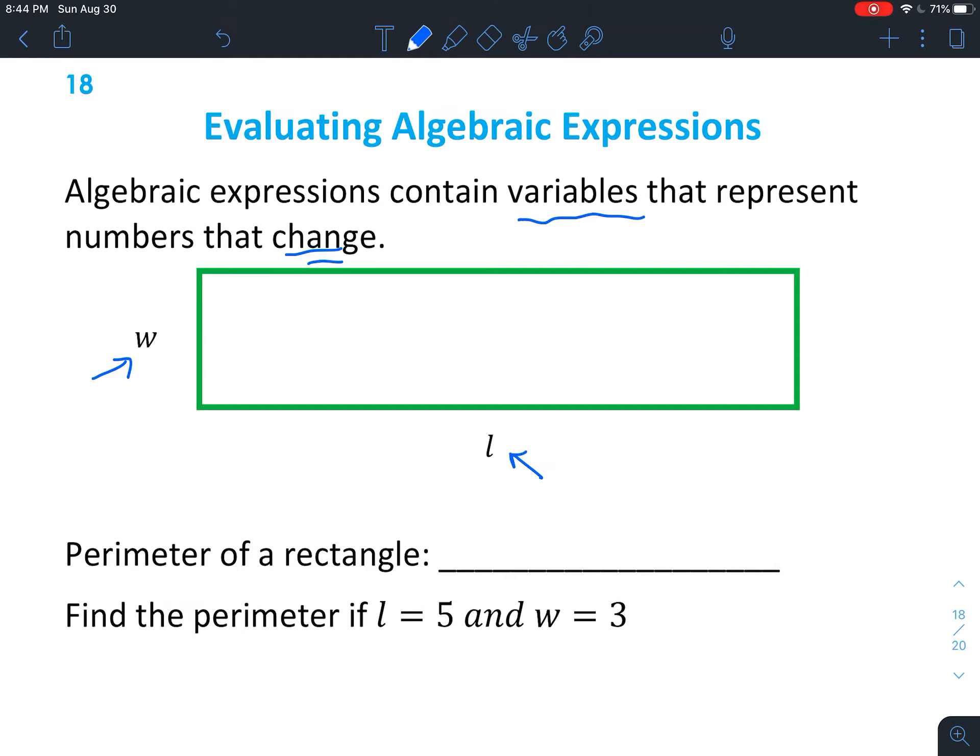Just keep in mind that this side is also W. When they're across from each other, they're the same length. And then up here is also an L. Usually you write it with a little loopy cursive L, so that way it doesn't look like a 1.